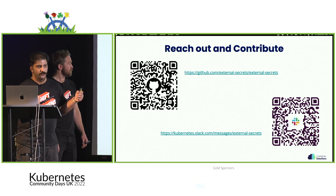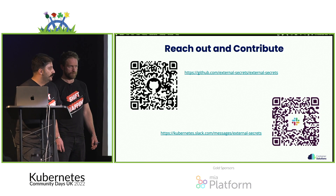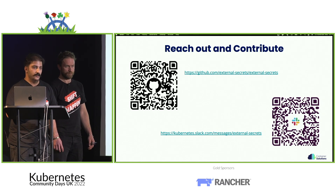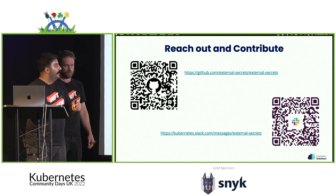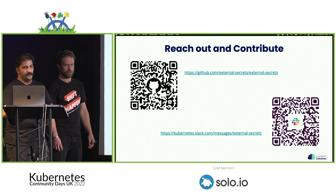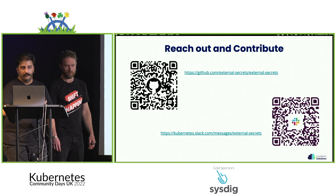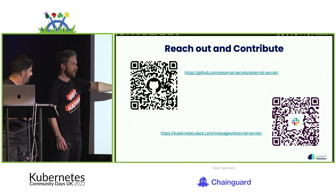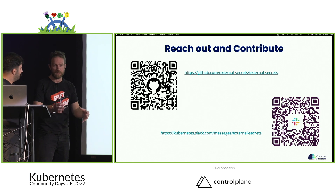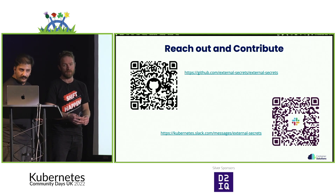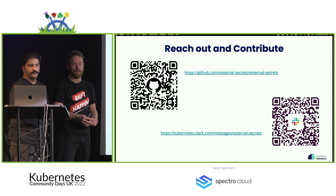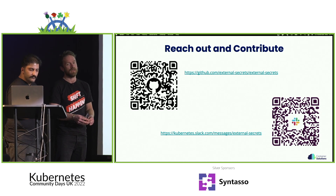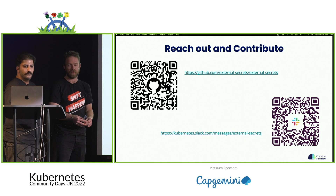You can reach out to us and contribute to the External Secrets Operator project by scanning the QR codes. We are on the Kubernetes Slack in the external-secrets channel, and you can also reach out from the Twitter account for External Secrets Operator. You're always welcome to contribute to the project. The Kubernetes Slack is the best way to contact us — if anybody tries using ESO and needs support, just reach out there. We also do an online meetup once a month. Our favorite thing is to hear about actual use cases and figure out how well we're mapping against the use cases people have in the real world.